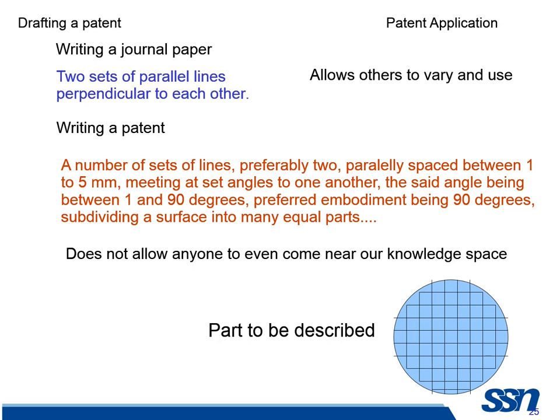Drafting a patent is extremely difficult — very different from what you do in a research paper. For example, in a research paper, suppose I want to say 'two sets of parallel lines perpendicular to each other.' It's very easy to write. Because in research, I want others to use my idea — I am interested in citation index, etc. Research is inclusive. But when you write a patent, it is exclusive. You don't want anybody to copy your idea. You write it in such a way that nobody can even come near you.